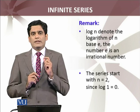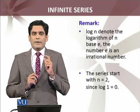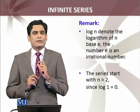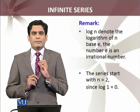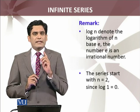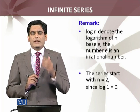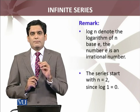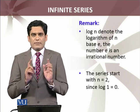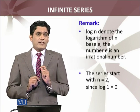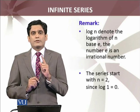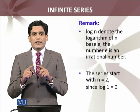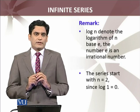The series starts with n equals 2. Note that log n here is the natural logarithm base e, where e is an irrational number — we will discuss and prove that in detail. The series starts at n equals 2 because log of 1 equals 0, so when n equals 1 we would have something divided by 0, which is infinity, and we cannot allow that.